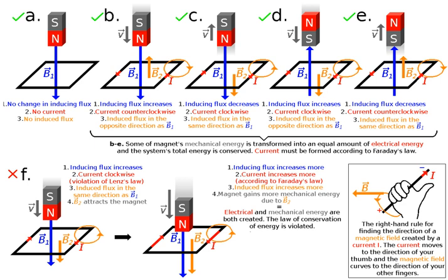Lenz's Law explains the direction of many effects in electromagnetism, such as the direction of voltage induced in an inductor or wire loop by a changing current, or the drag force of eddy currents exerted on moving objects in a magnetic field. Lenz's Law may be seen as analogous to Newton's Third Law in classic mechanics.